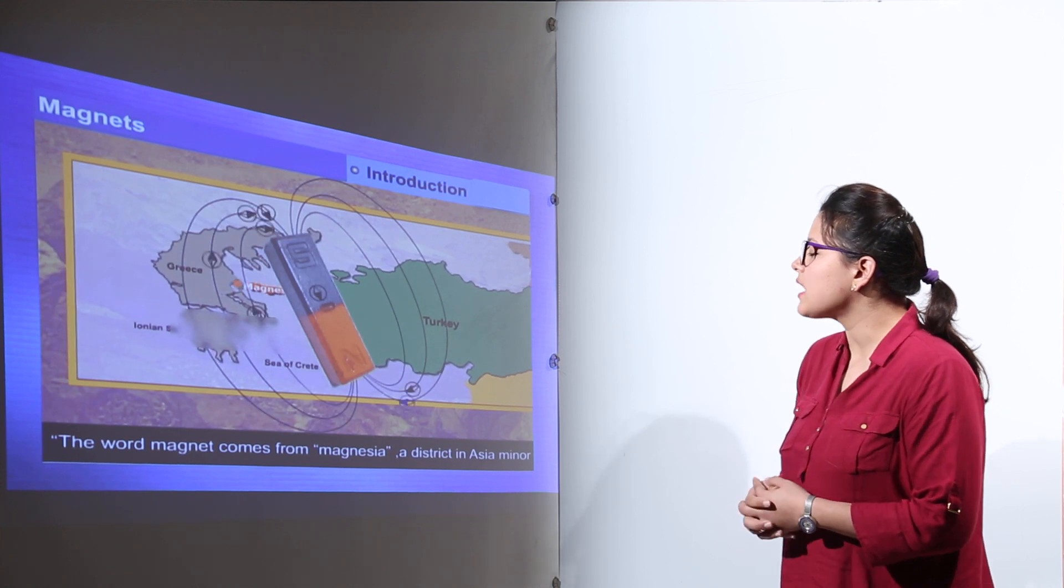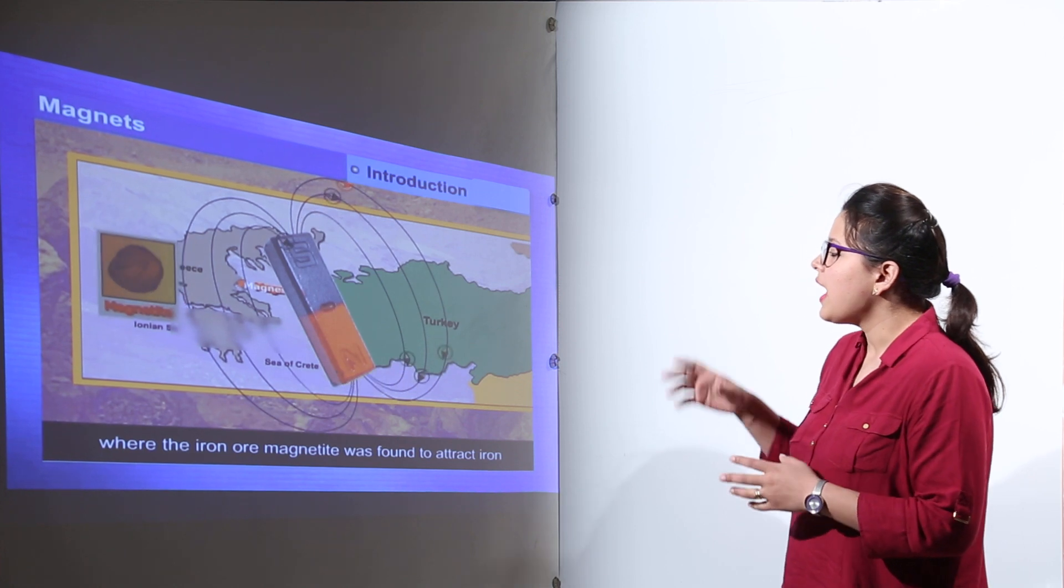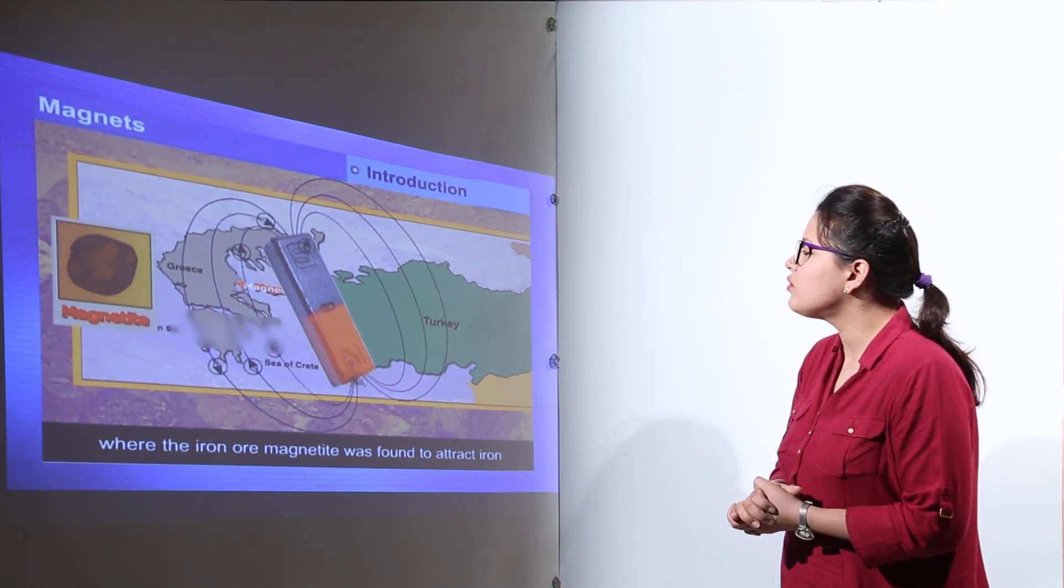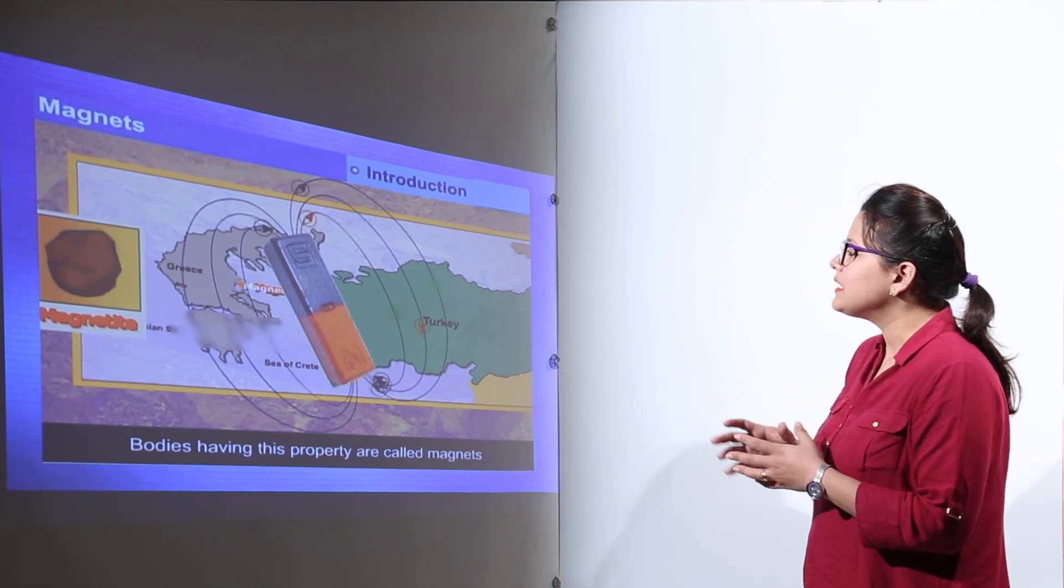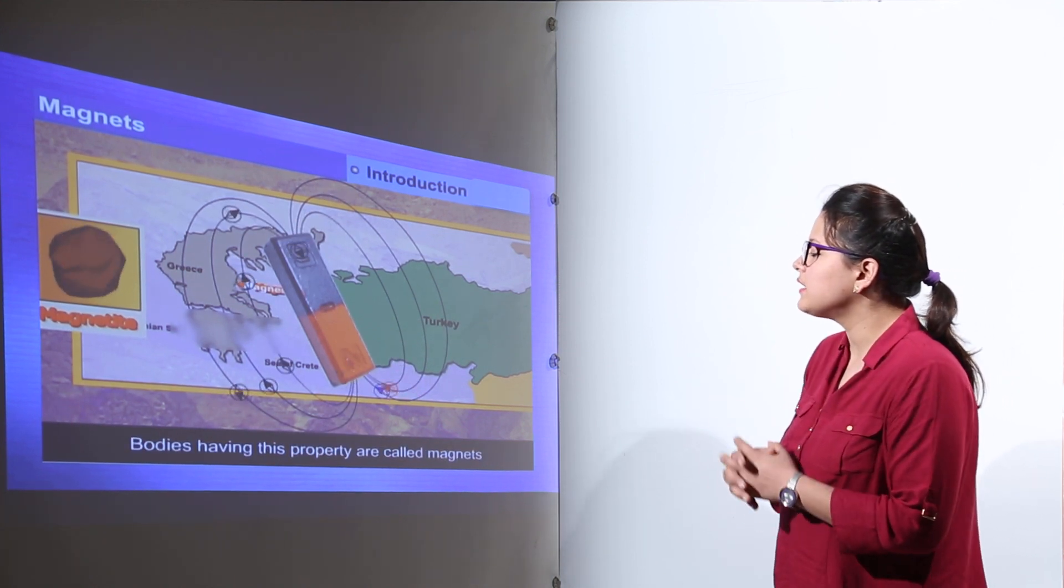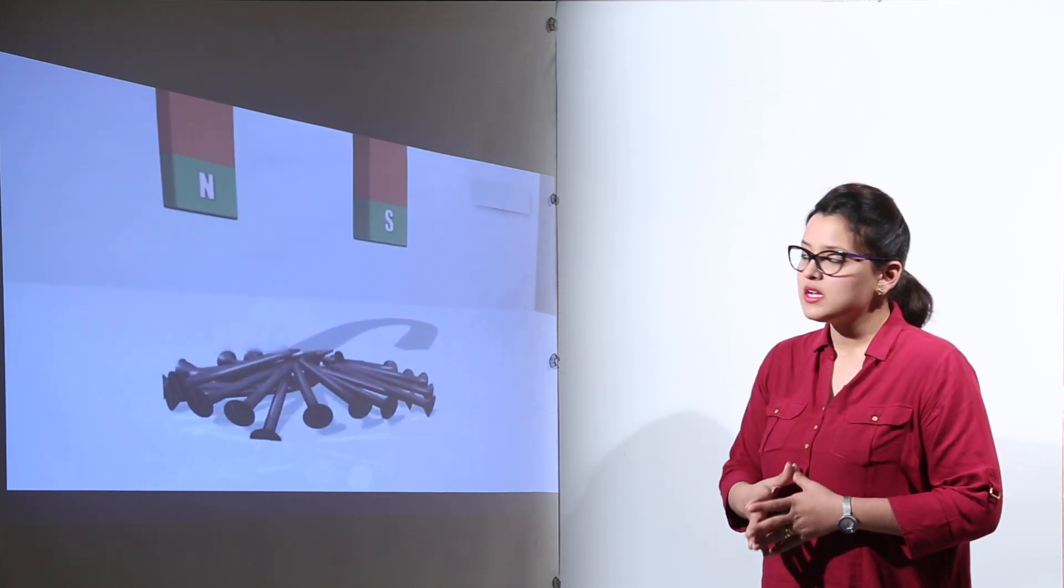The word magnet has come from the word Magnesia, which is actually a district in Asia Minor region, and there the iron ore magnetite was found to attract iron. So this property is known as magnetism, and the bodies which have this attractive property are known as magnets.